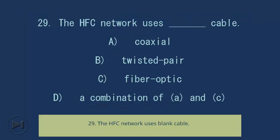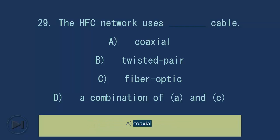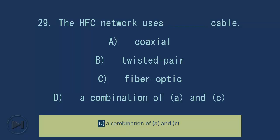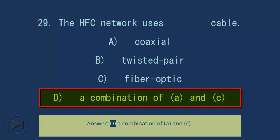Question 29: The HFC network uses blank cable. A. Coaxial. B. Twisted pair. C. Fiber optic. D. A combination of A and C. Answer: D. A combination of A and C.